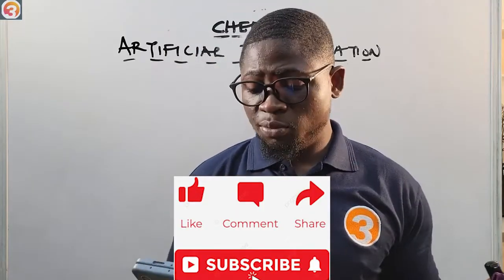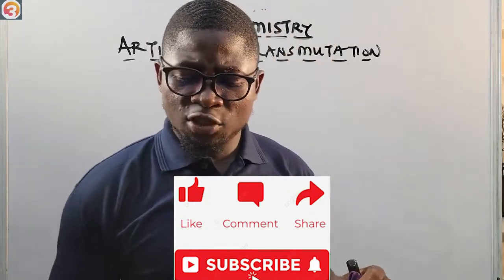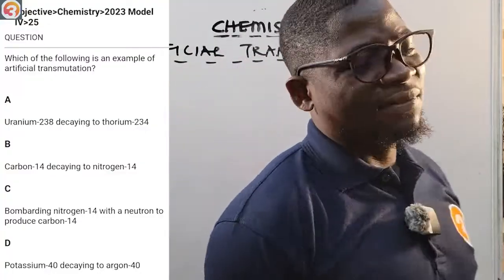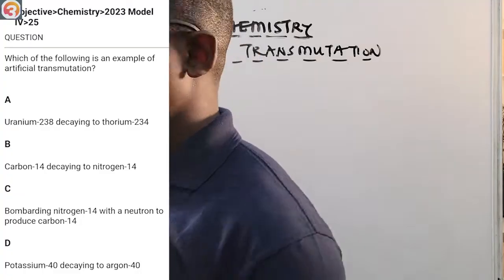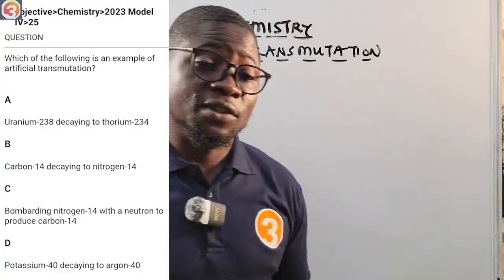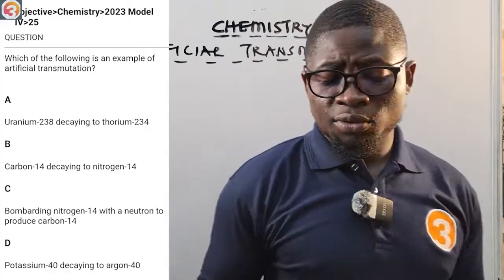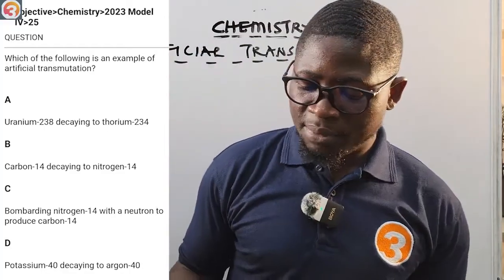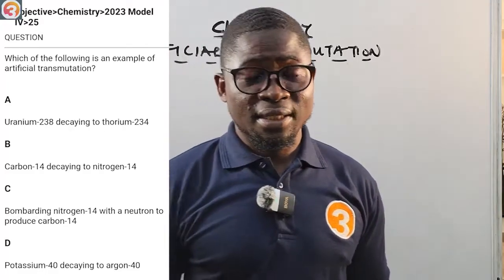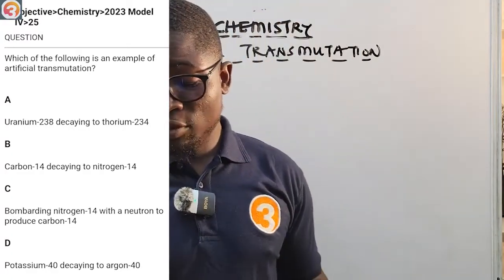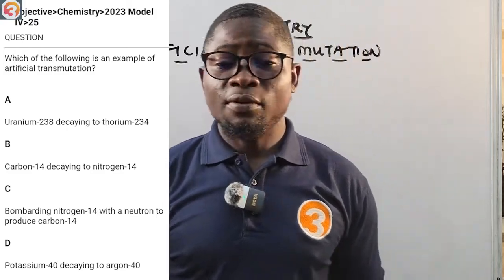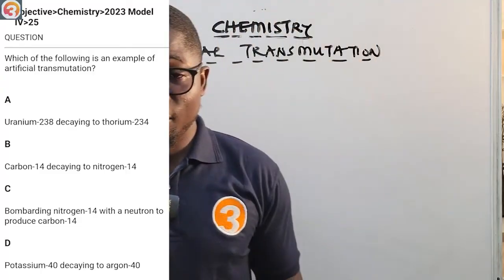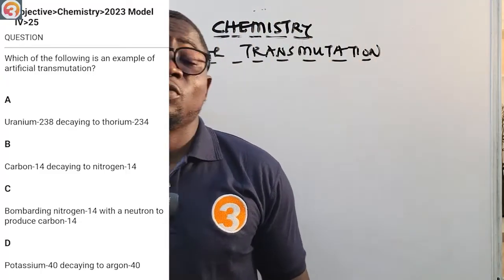This tutorial is brought to you by OT School Jump. There's a 2023 question about artificial transmutation — question 25 — which asks: which of the following is an example of artificial transmutation? A: uranium-238 decaying to thorium-234. B: carbon-14 decaying to nitrogen-14. C: bombarding nitrogen-14 with a neutron to produce carbon-14. D: potassium-40 decaying to argon-40.